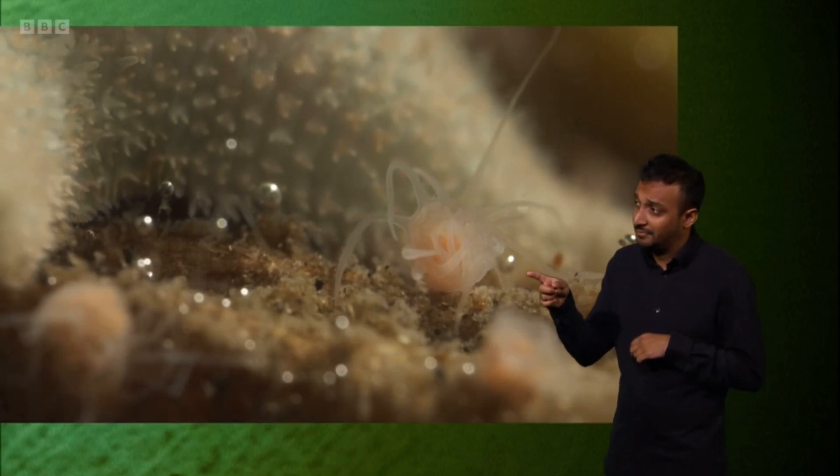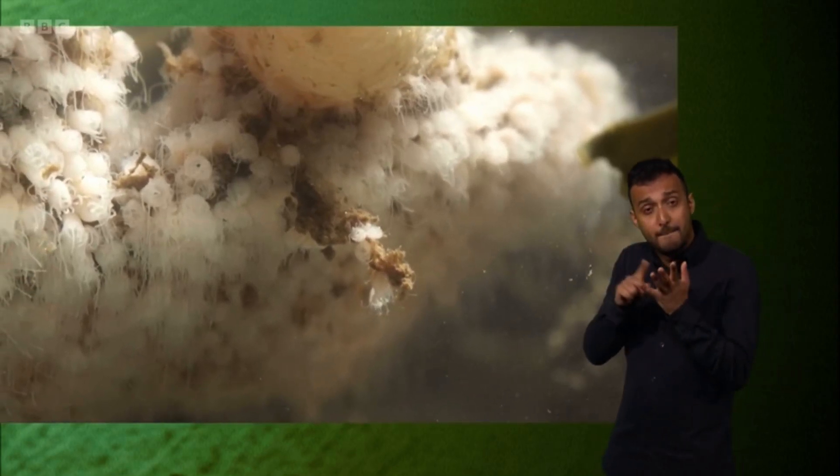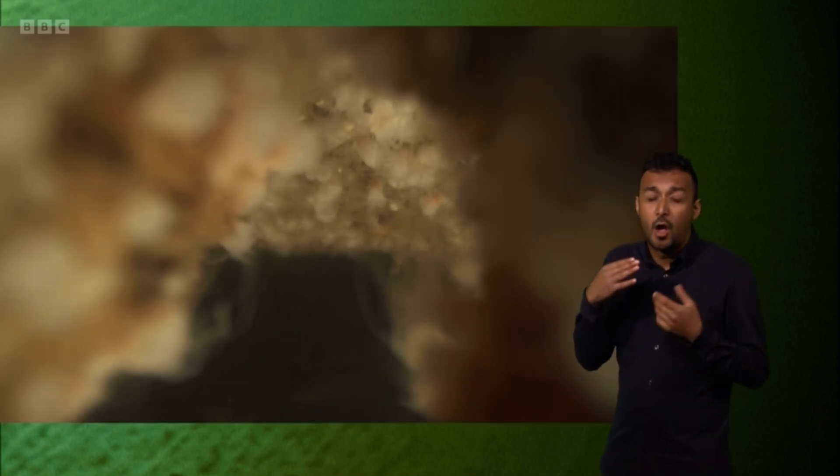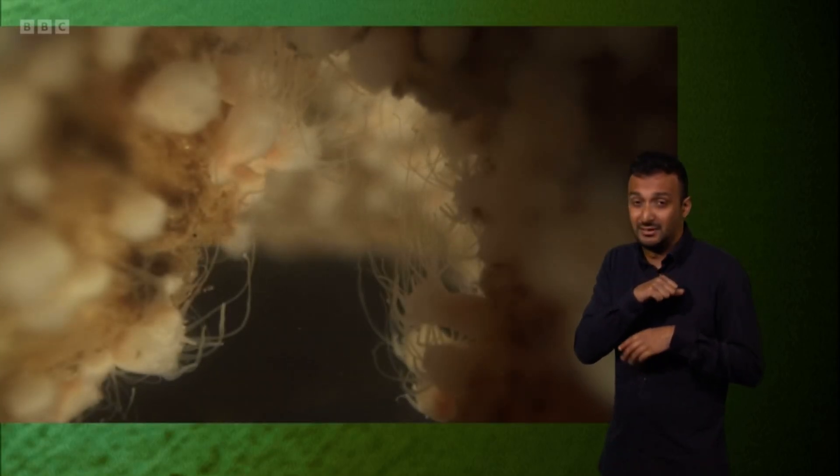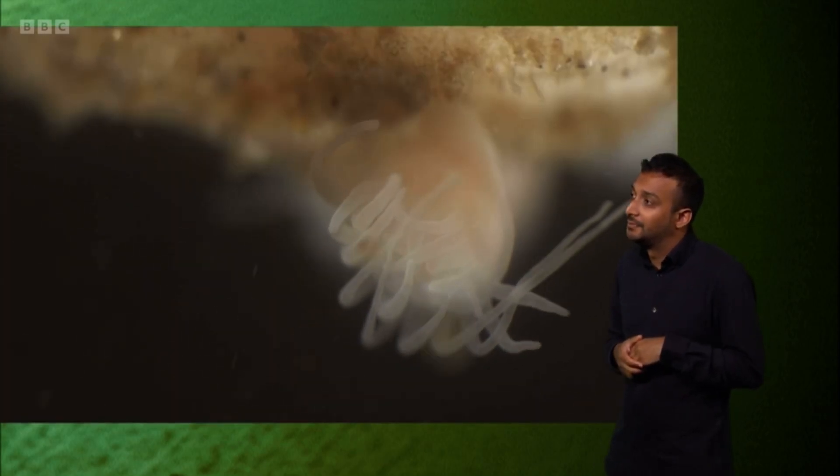Jellyfish polyps. They're anchored to rocks around our coastline in their hundreds of thousands, feeding on passing scraps of plankton.